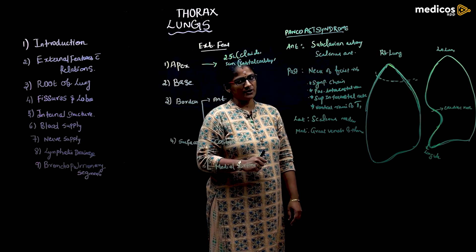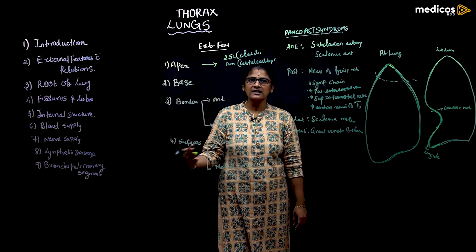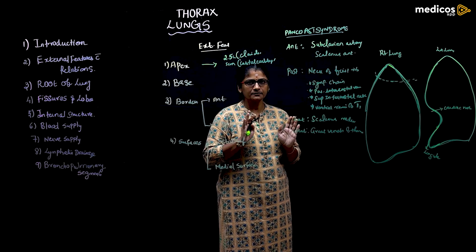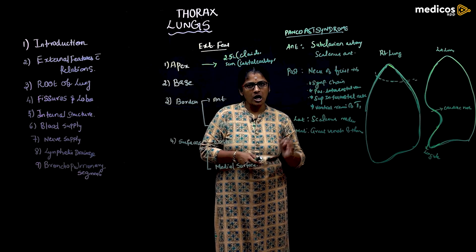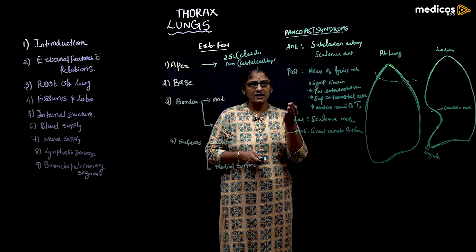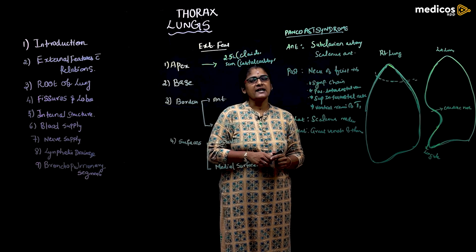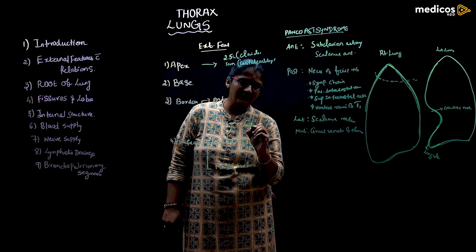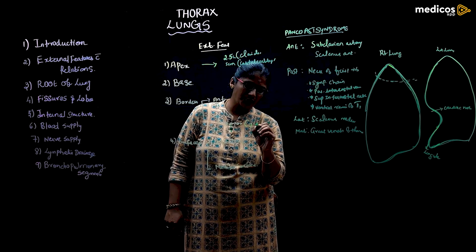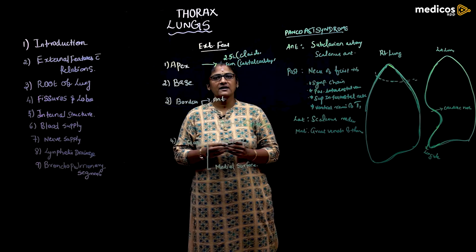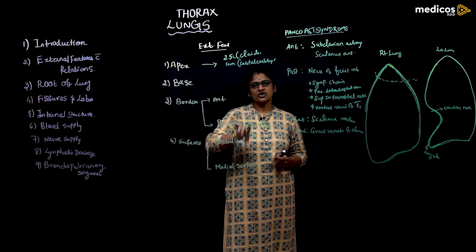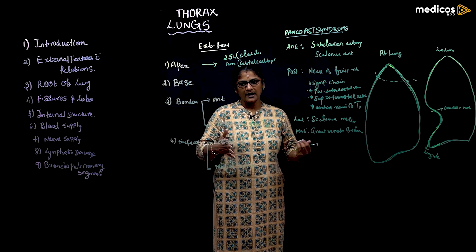The posterior border is rounded — not sharp but bland. It extends from the spine of C7 to T10 vertebra.